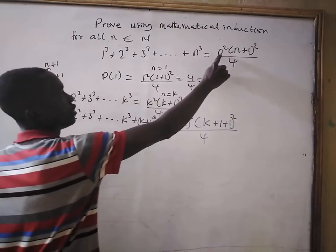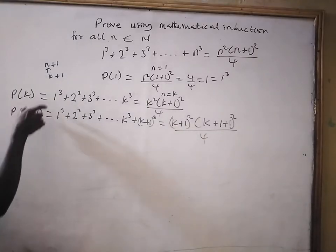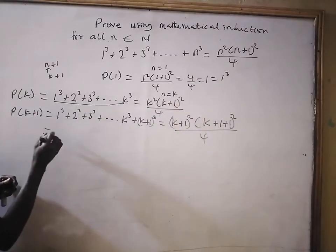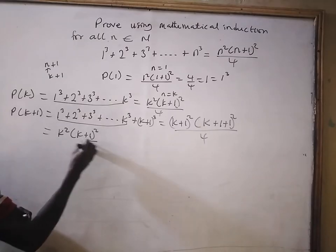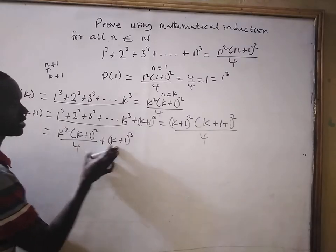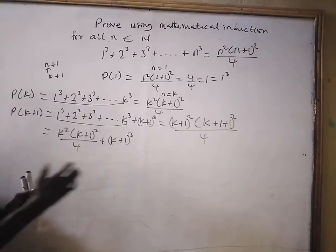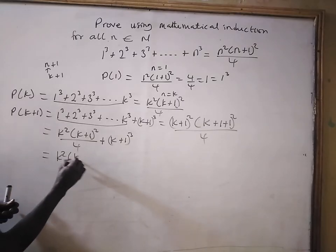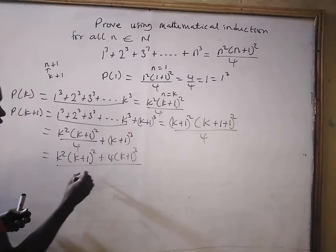Remember that wherever you see n, you put k plus 1. So n here is k plus 1. From our assumption, the sum from 1³ to k³ gives us k squared times (k+1) squared divided by 4. So we replace that whole expression and add (k+1)³, and prove that this equals the right-hand side.